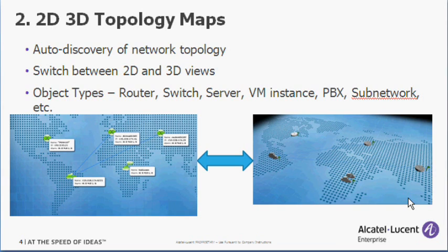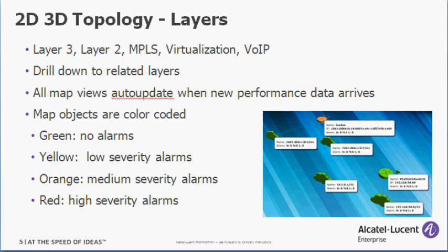Various object types are represented in these views including routers, switches, servers, etc. Several different types of maps are provided including layer 3, layer 2, and MPLS.